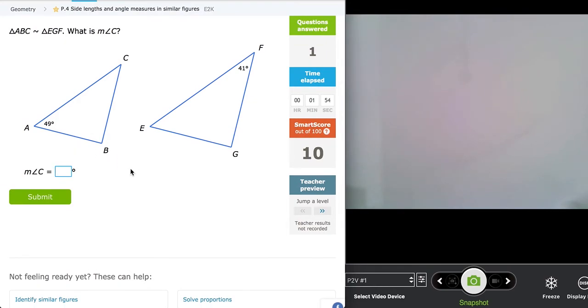Let's take a look at these two triangles. Triangle ABC is similar to triangle EGF. What is the measure of angle C? We are missing angle C. Well, first of all, we need to figure out what does angle C correspond to?